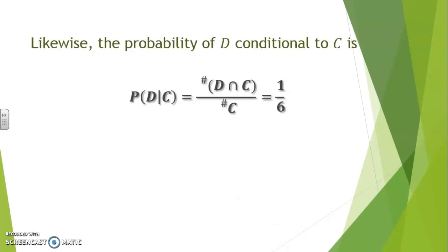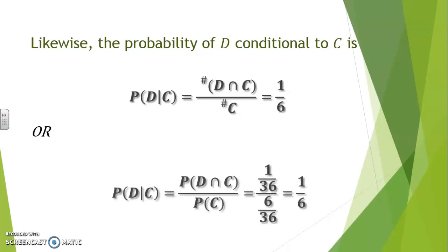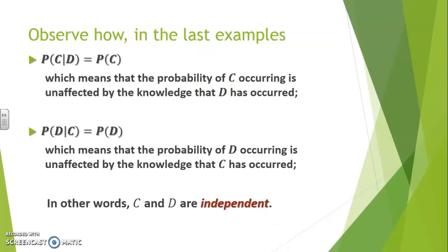Likewise, the probability of D conditional to C is calculated by finding the cardinality of the intersection — one sample point at the intersection of D and C — divided by the cardinality of C, which is 6, giving 1 over 6. This is also true through the ratio of probabilities. Observe how the probability of C conditional to D equals the probability of C itself, meaning the probability of C occurring is completely unaffected by whether or not D has occurred. P of D knowing C was also equal to P of D, meaning D is unaffected by knowledge of C. In other words, C and D are independent events.